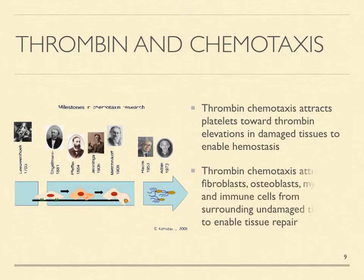The next event in the tissue repair sequence is chemotaxis. Thrombin-seeking repair cells in undamaged adjacent tissues move between the loosened cells and inflamed tissues to enter damaged tissues, where thrombin energizes their repair activities.